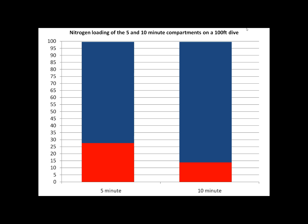Watching this again with a scale and no pauses — this is how nitrogen loading looks on two different compartments on a dive to 100 feet. Looking at the 5-minute compartment on the left, we can see it getting very close to equilibrium — that must be 30 minutes of dive time, and it has stopped absorbing nitrogen. On the right, the 10-minute compartment is still absorbing nitrogen past 30 minutes, but we can see it approaching equilibrium close to 60 minutes. At six half times, the 10-minute compartment is now in equilibrium at 100 feet.